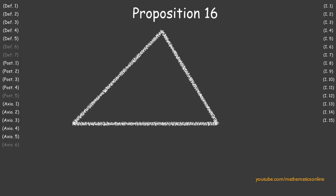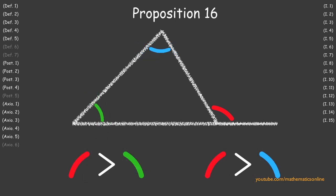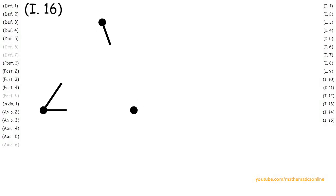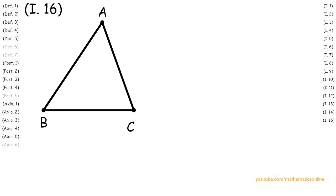In Proposition 16, we proved that if any side of a triangle is extended, then the exterior angle is always greater than either of the opposite interior angles. To begin this proposition we are given the triangle ABC and we extend line BC with point D to create the exterior angle ACD. We will prove that angle ACD is greater than angle ABC and angle BAC.